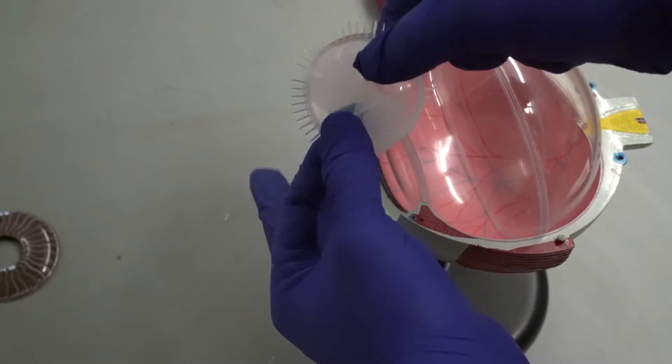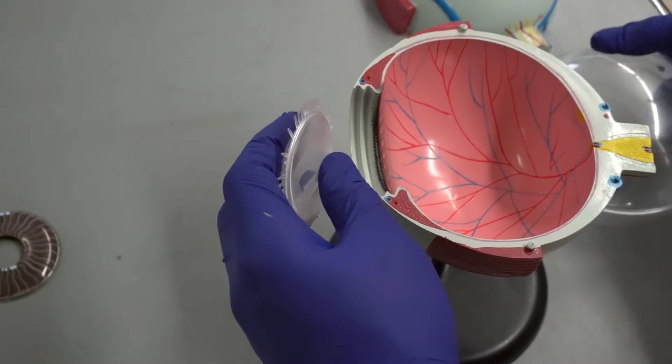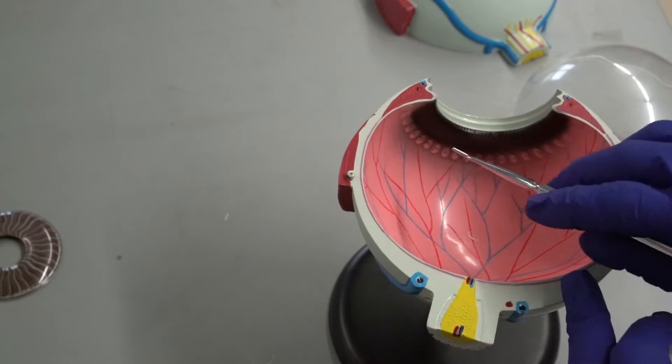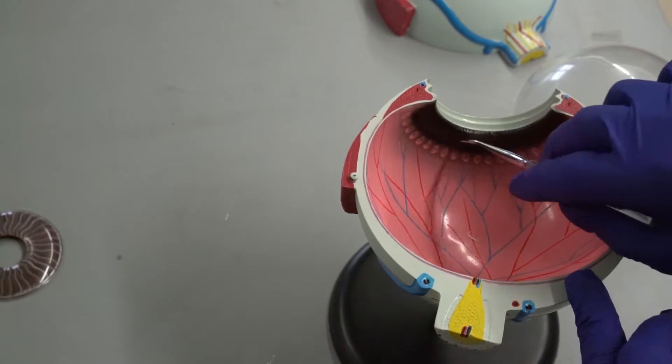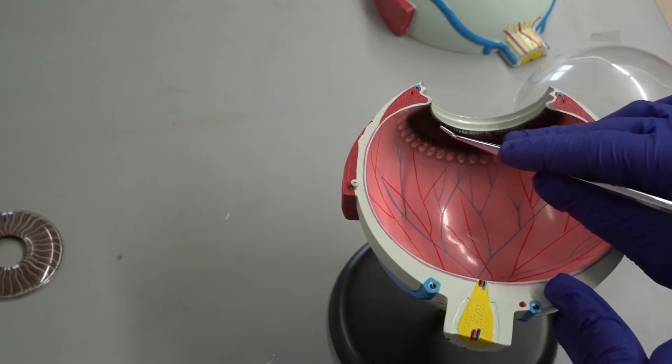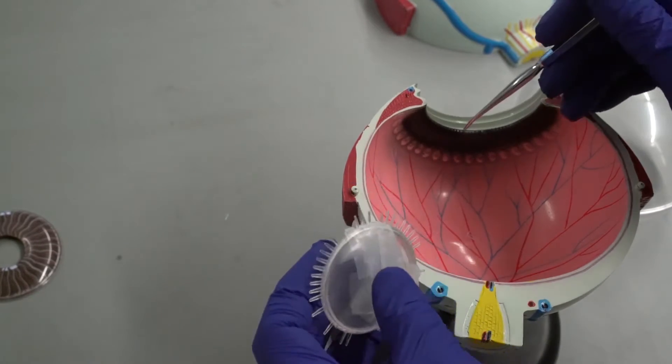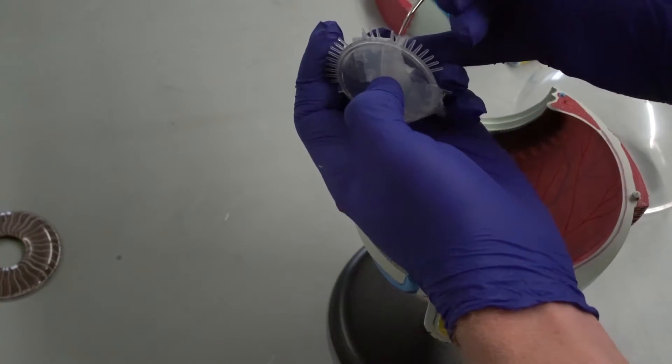And what is controlling the shape of the lens is called your ciliary body. So you have your ciliary body back here, which is composed of your ciliary muscle and your ciliary processes, which are these little things sticking out here. And each one of these processes is going to be attached to one of these fibers.